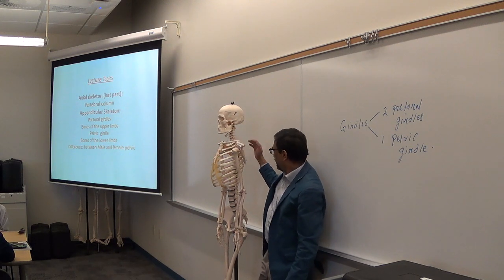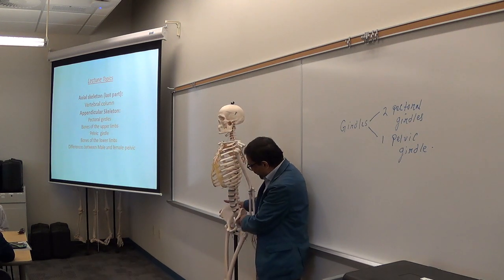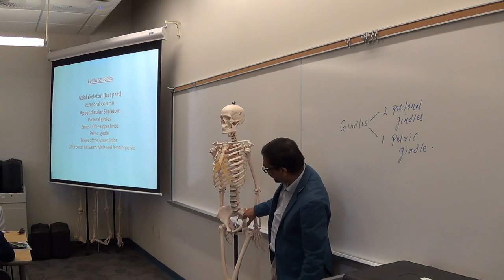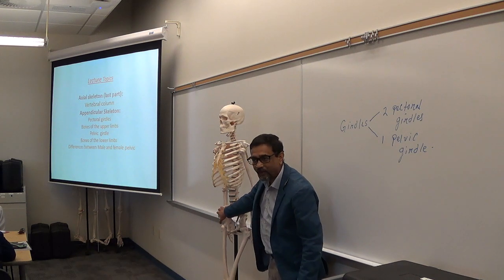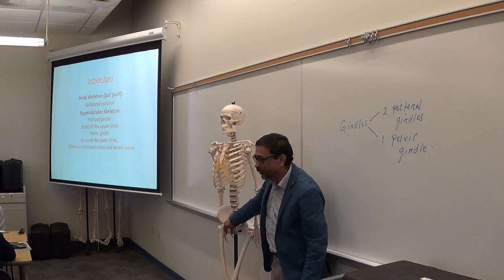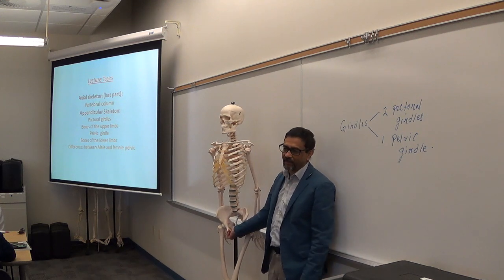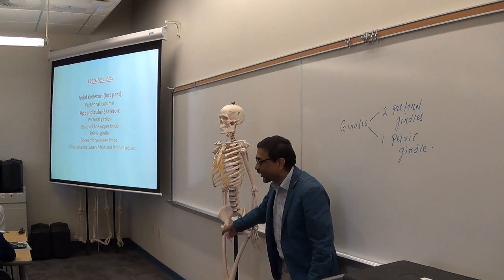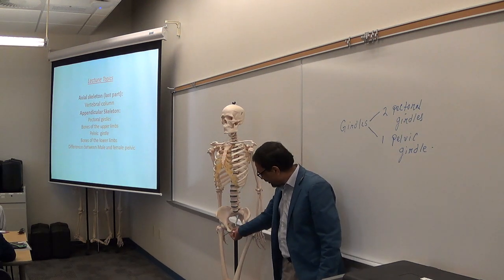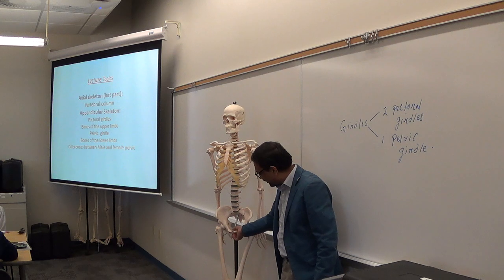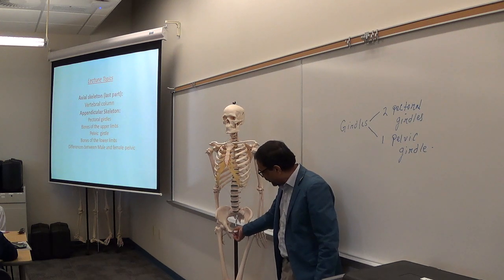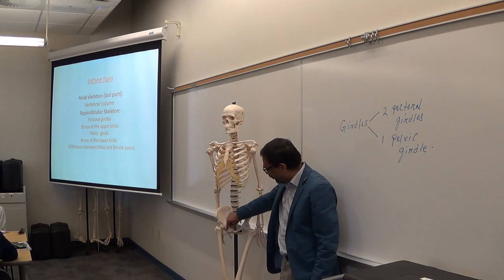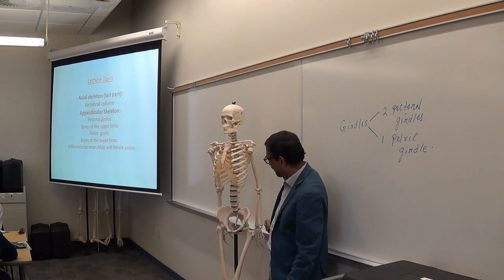The pelvic girdle is formed by two hip bones. This is one hip bone or pelvic bone, and this is another. These two pelvic bones together form the pelvic girdle. They join at the pubic symphysis, which is a fibrocartilaginous structure. So, two hip bones or pelvic bones join to form the pelvic girdle.